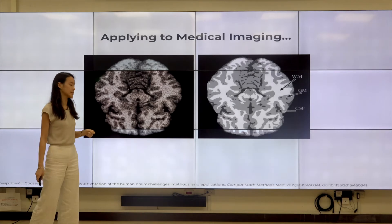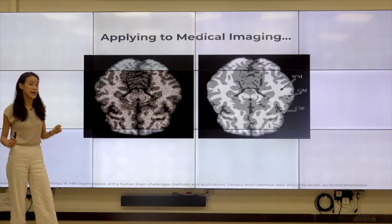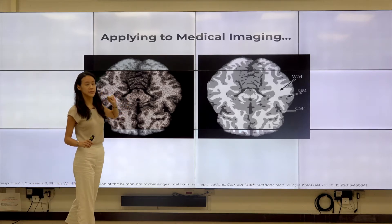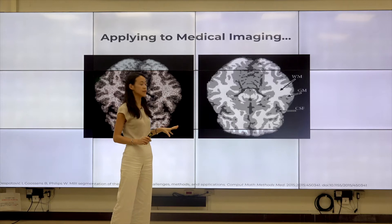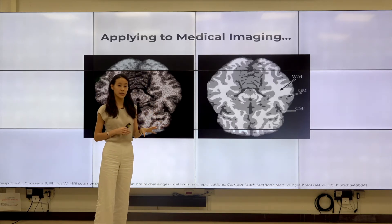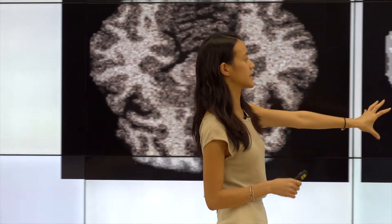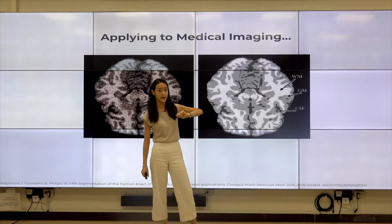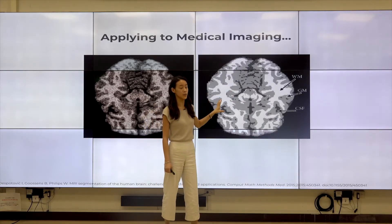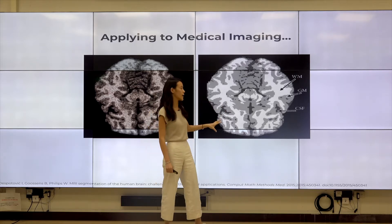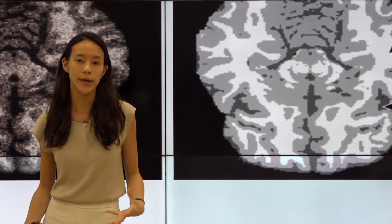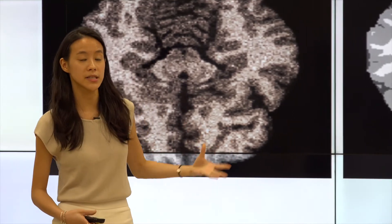Applying this to medical imaging — remember that phrase. This image is taken from the segmentation lecture. Originally we have the raw scan, and after segmentation we see three different colors: white, dark gray, and light gray. The labels WM, GM, and CSF are not actually present after segmentation alone, but through classification we're able to identify each of these three parts and give meaning to these segmented areas.